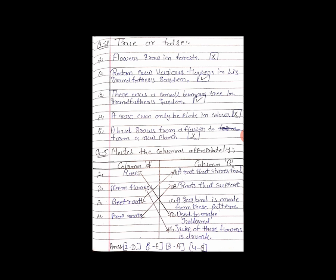Very good. Number 3 — Beet root. Beet root kya hai? A root that stores food. So match it with number A — column B mein number A ke saath. Number 4 — Prop roots. Prop roots ko kis ke saath joint karenge? Number B — Roots that support. So yahan pe line kheenchni hai — Prop roots ko 'Roots that support,' match karna hai number B ke saath.